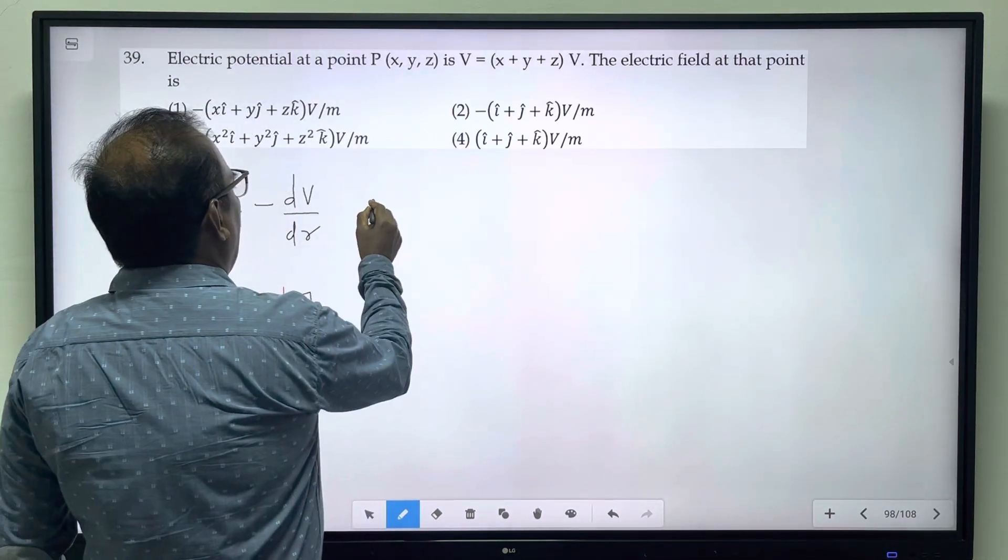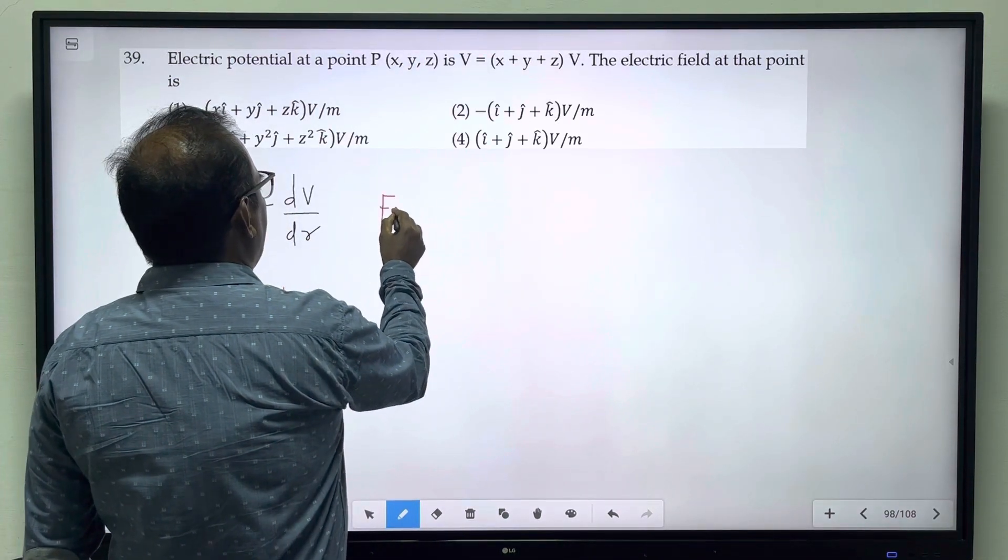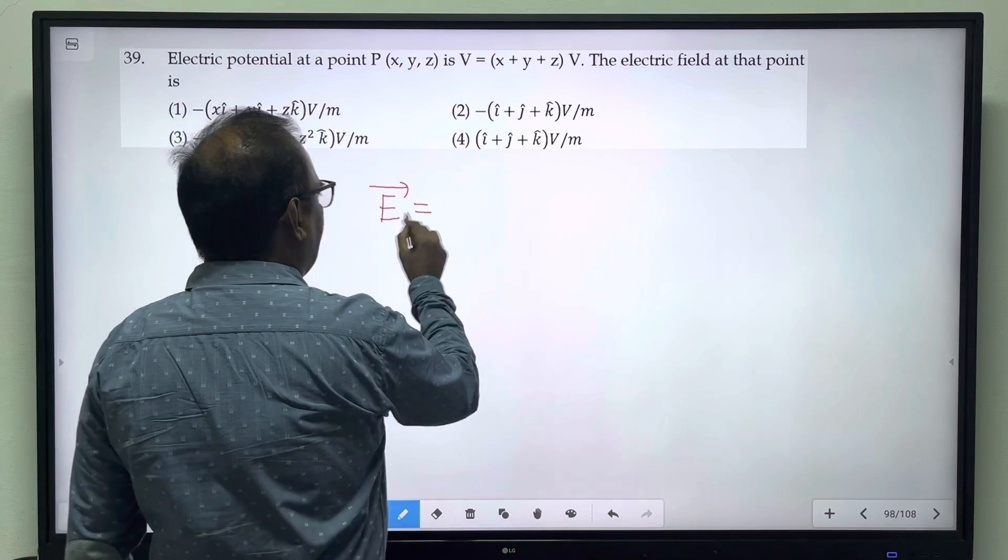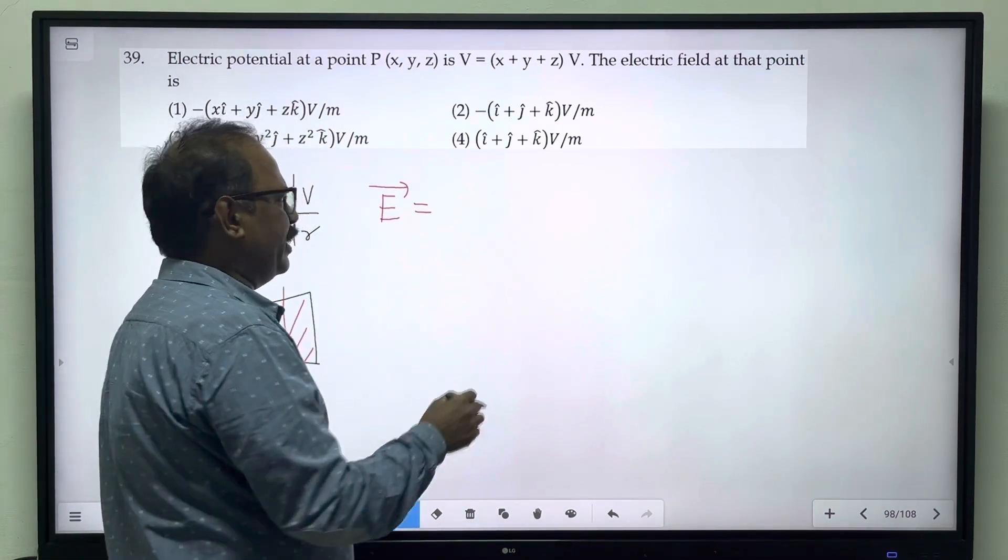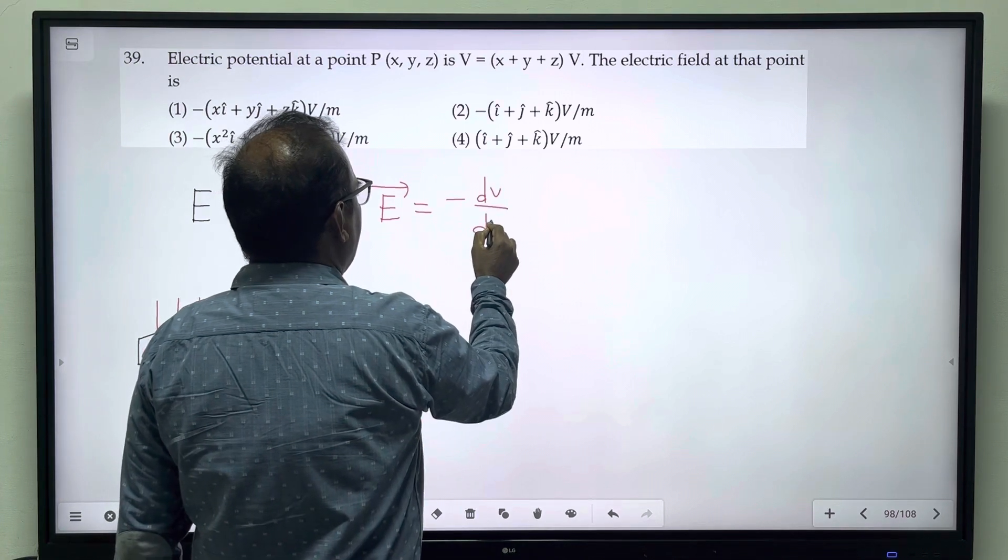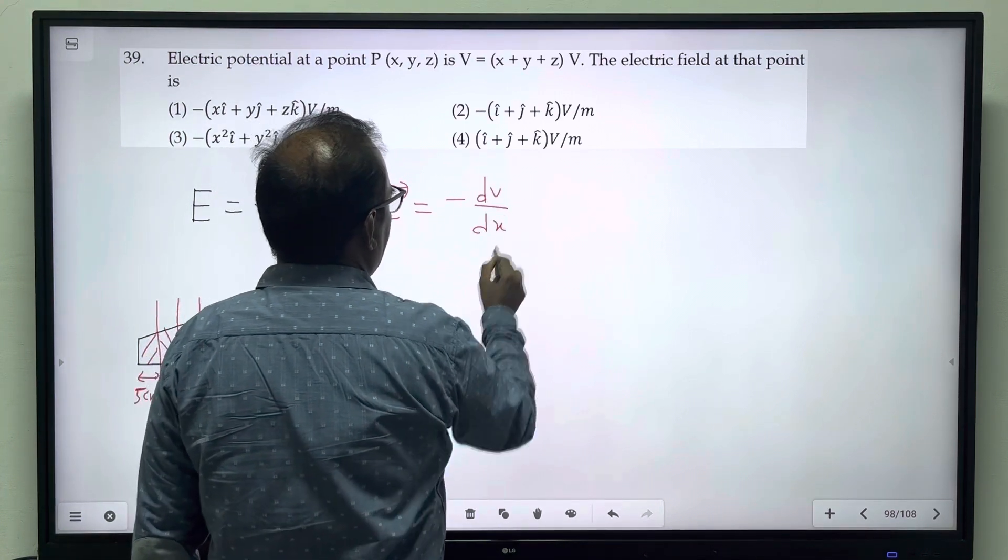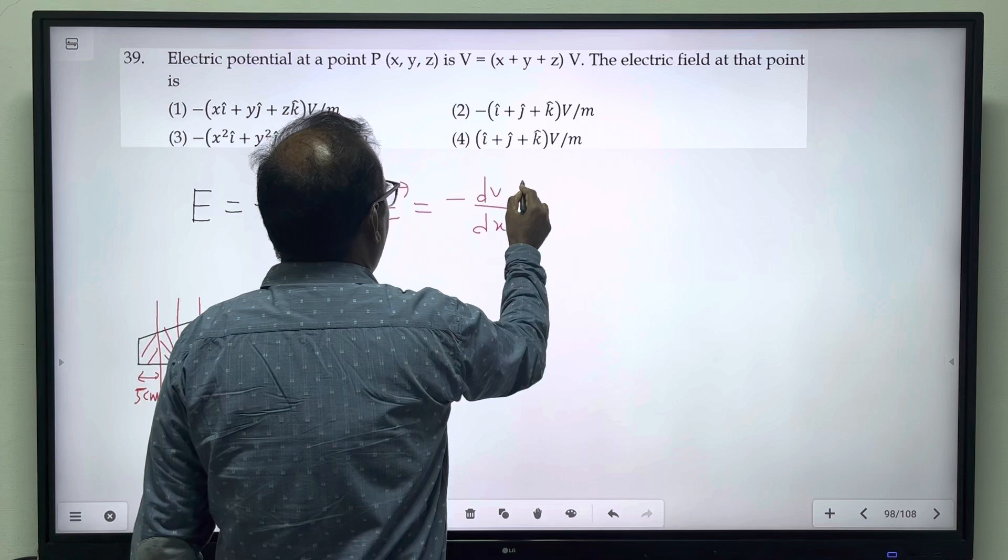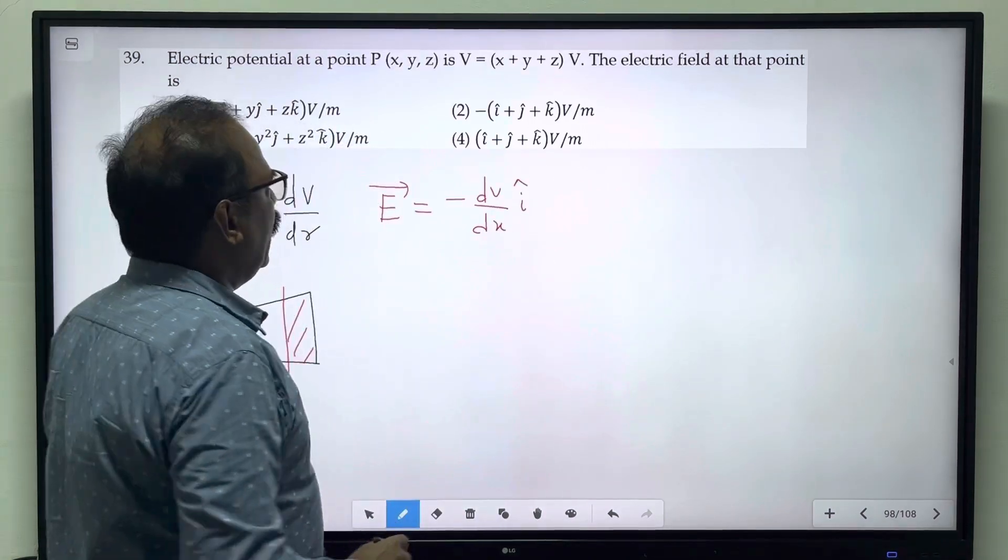In two-dimensional space, the electric field along the x-axis is minus dV by dx, E vector equals i-cap.